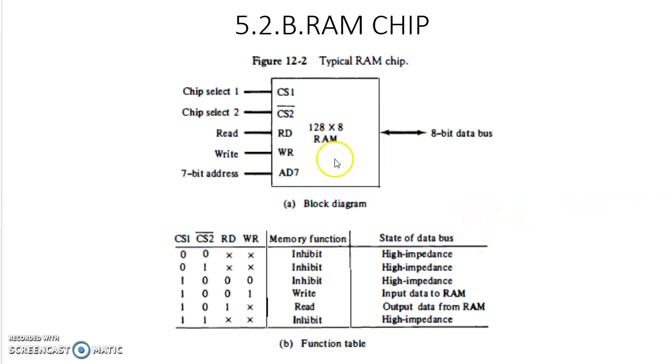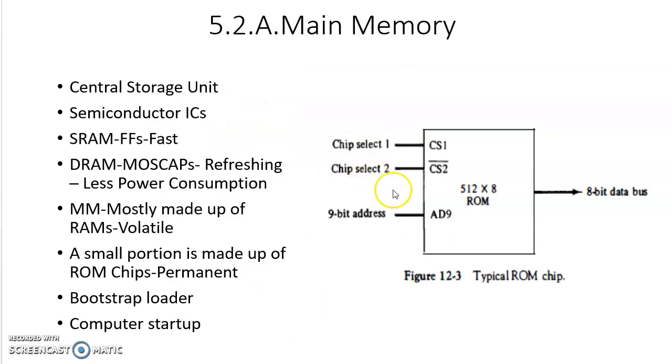Let us look at the RAM chip. This is the typical RAM chip. Here along with the chip selects, chip select 1 and chip select 2, there are two control lines read and write which were not available here because ROM chip is only used to read. No need to mention read or write. Here only once it will be written and since then it will be only used to read.